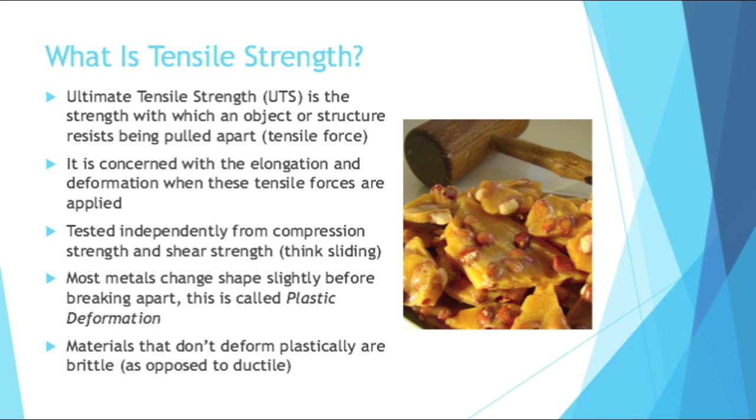Most metals change shape slightly before breaking apart. This is called plastic deformation. A lot of things do something called necking as well, which is when the diameter gets very small in a certain spot but remains larger around it. Materials that don't deform plastically are brittle, as opposed to things that do deform plastically are ductile.